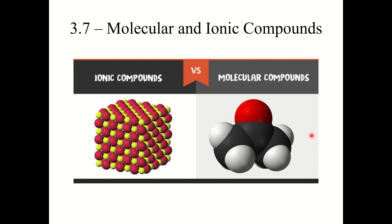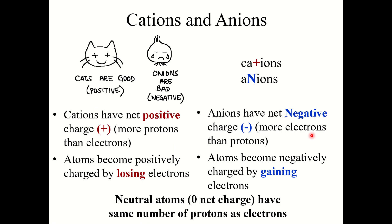We're going to combine sections and move into section 3.7, molecular and ionic compounds. We'll briefly introduce these before diving deeper in chapter 4. First, let's review cations and anions. Cations are ions with a net positive charge — they become positively charged by losing electrons. Anions have a net negative charge — atoms become negatively charged by gaining electrons. Neutral atoms have the same number of protons as electrons.